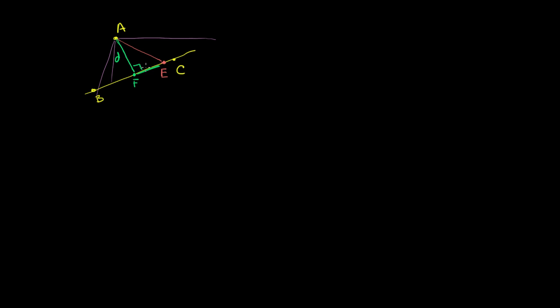A hypotenuse is always the longest side of a triangle. D squared plus whatever this length squared is going to equal this length squared. So hopefully that gives you a decent sense of why dropping the perpendicular will always give you the shortest distance between a point and a line. And that unique shortest distance is what we call the distance between a point and a line.